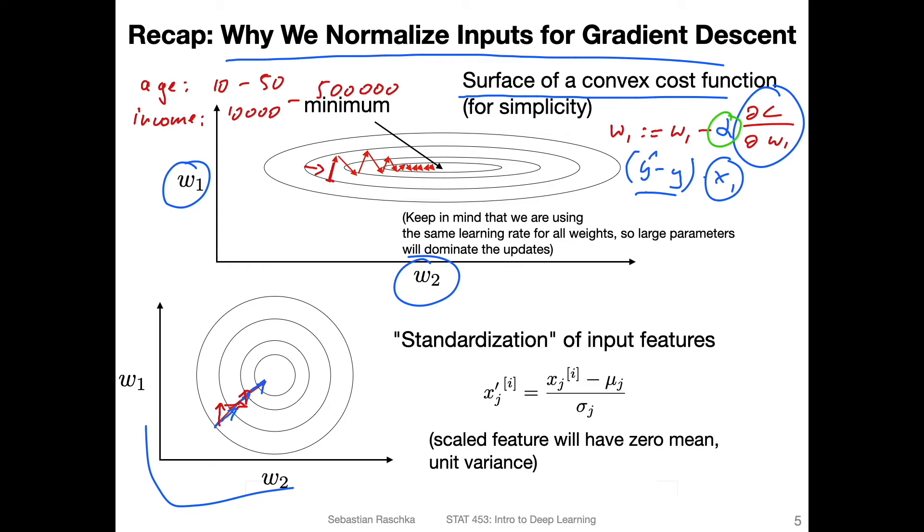Because if we consider now w_2, these learning rates, we usually use the same learning rate. And this really only works well if the features are on the same scale, right?